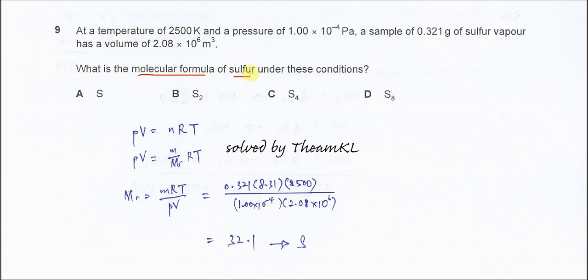Okay, so obviously we need to use the combined gas law, PV equals nRT, and we know that n is actually mass over molar mass. So rearranging, you get mass times RT over PV.